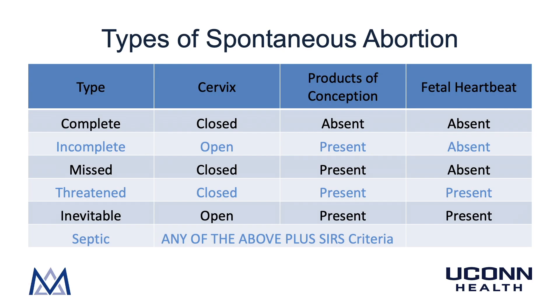Before we discuss the findings of the ultrasound and blood work for patient ZC, I want to quickly review the types of spontaneous abortion. This shows up a lot on your shelf exam and is very clinically relevant. There are various types of spontaneous abortion, and how we determine them clinically is based on three things: whether the cervix is open or closed, whether there are products of conception still remaining within the uterus, and whether there is a fetal heartbeat present. A complete abortion occurs after the patient has completely miscarried and passed all of the pregnancy tissue. Her cervix would be closed, the products of conception would be absent from the uterus on ultrasound, and there would be no fetal heartbeat.